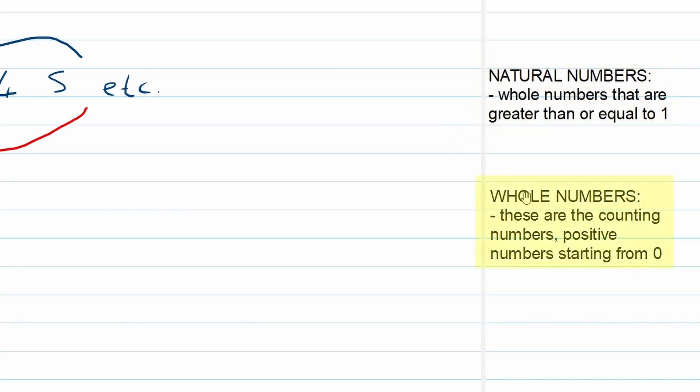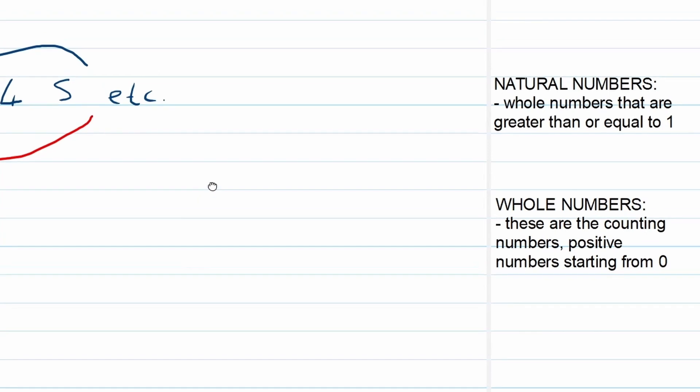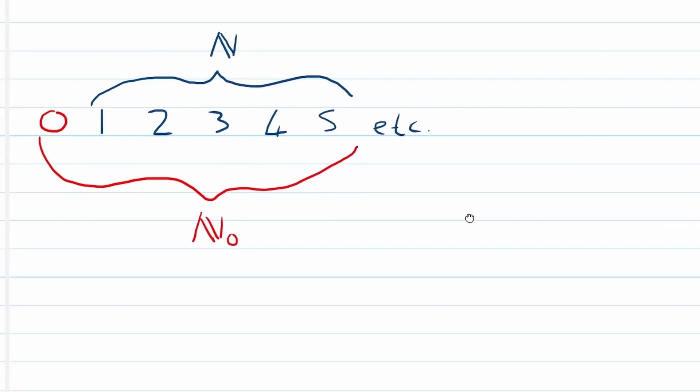Whole numbers - we add our zero to the mix. So it's the same as natural numbers, we just add zero.